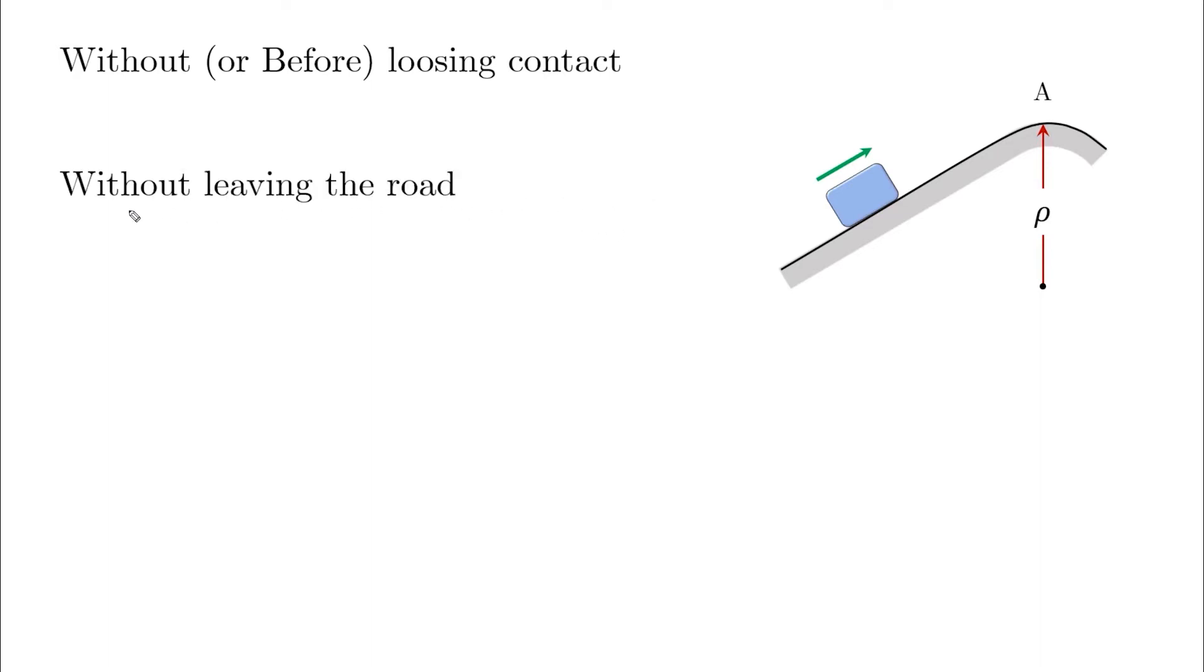In some situations, the question will give you a hint about the contact between, let's say for example, the block and the surface here. So you will read something like without losing contact, or before it loses contact, or sometimes without leaving the road, without leaving the track. And they all have the same meaning.